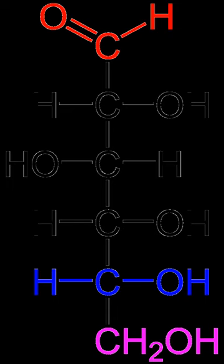Carbohydrates are found in a wide variety of natural and processed foods. Starch is a polysaccharide, abundant in cereals and processed foods based on cereal flour, such as bread, pizza, or pasta. Sugars appear in human diet mainly as table sugar, lactose abundant in milk, and glucose and fructose, both of which occur naturally in honey, many fruits, and some vegetables.